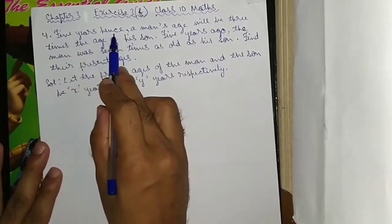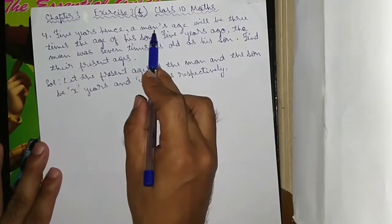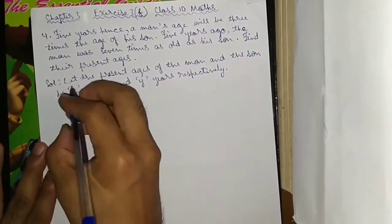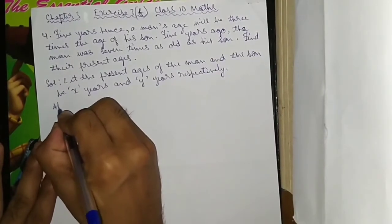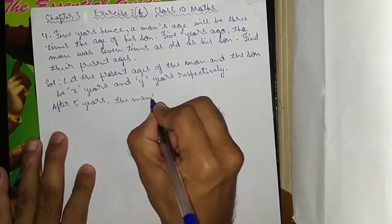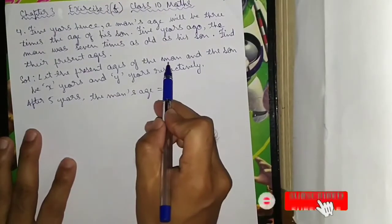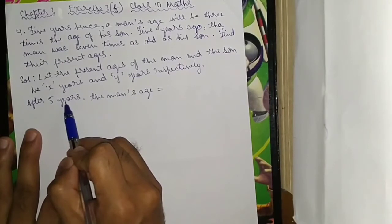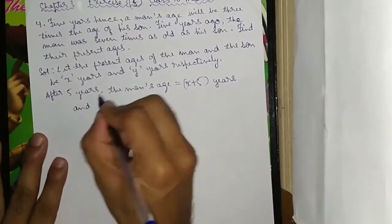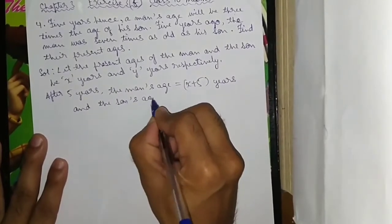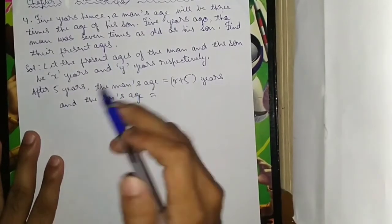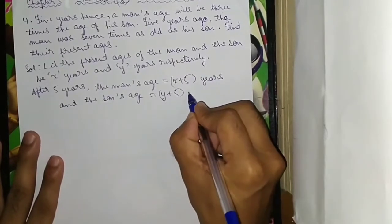Five years hence, after 5 years, the man's age will be X plus 5 years and the son's age will be Y plus 5 years.